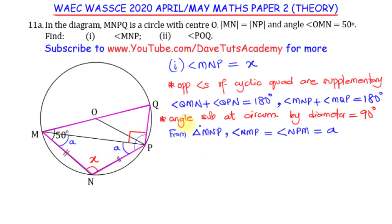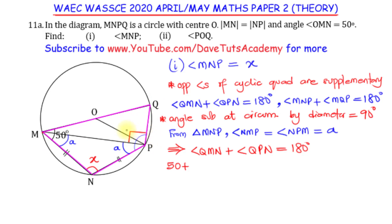From what I have been saying, angle QMN plus angle QPN — which are opposite angles of the cyclic quadrilateral — add up to 180 degrees. What is QMN? QMN is given as 50, plus QPN. Now QPN happens to be this 90 plus this A — that is the right angle plus A, which is QPN. So the sum of the three is 180 degrees, such that A will be 180 minus 50 plus 90, which is 140. So A is nothing but 40 degrees.